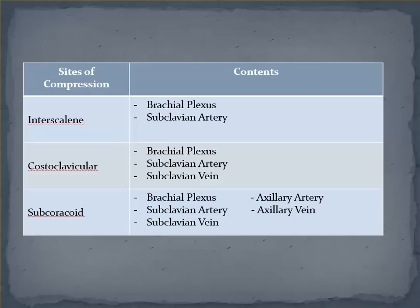When we talk about the neural structures being compressed in each of the aforementioned sites, the brachial plexus can be entrapped really in any of those regions, most commonly the lower plexus affecting the C8 and T1 nerve roots. Notice that the subclavian artery can be compressed between the scalenes, but the vein runs just anterior to the anterior scalene and therefore isn't subject to compression. The axillary artery and veins can be entrapped primarily in the retropectoral space.